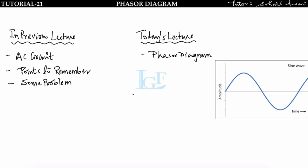In the previous lecture we covered how to solve the AC circuit using the phasor approach and solved some problems based on that. In today's lecture we will be covering phasor diagrams. A phasor is a mathematical quantity which has magnitude and phase in an AC electrical signal.